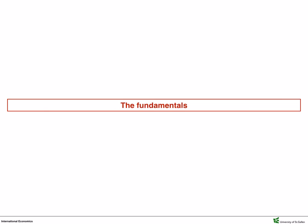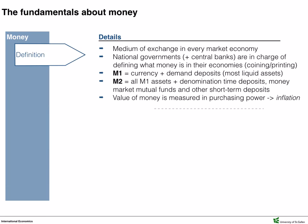Let's start with the fundamentals. Money is the medium of exchange in every market economy. National governments and central banks are in charge of defining what money is in their economies, i.e. coining and printing it. M1 stands for currency and demand deposits, that is all the most liquid assets. M2 comprises of all M1 assets plus short-term deposits, like savings accounts, small-time deposits, and money market mutual funds and so forth.